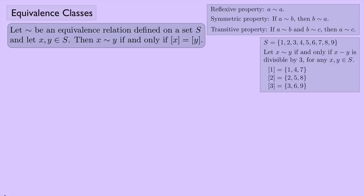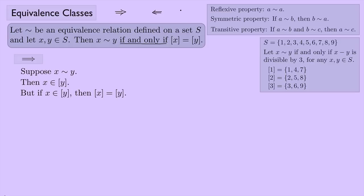Next proof: let tilde be an equivalence relation on S, and let x and y be elements of S. Then x is equivalent to y if and only if [x] equals [y]. Since this is an if-and-only-if, we must prove both directions. First direction: suppose x is equivalent to y. That means x is an element of [y], and therefore [x] equals [y] — which is what we showed in the previous proof.